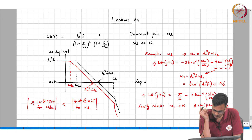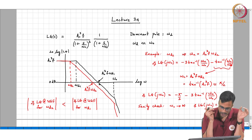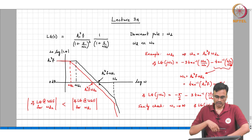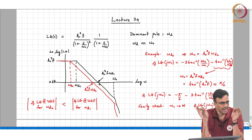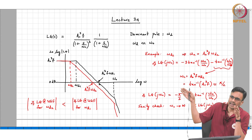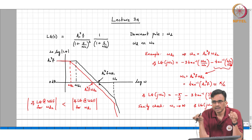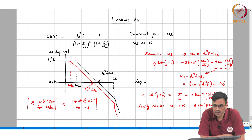The angle of the loop gain at the unity gain frequency is basically an indicator of the location and effect of all the high-order poles on the stability of the system. If all the poles were infinitely far away from the unity gain frequency, the angle would simply be negative 90 degrees. Any increase in phase lag beyond negative 90 degrees reflects how close the poles are to the unity gain frequency.